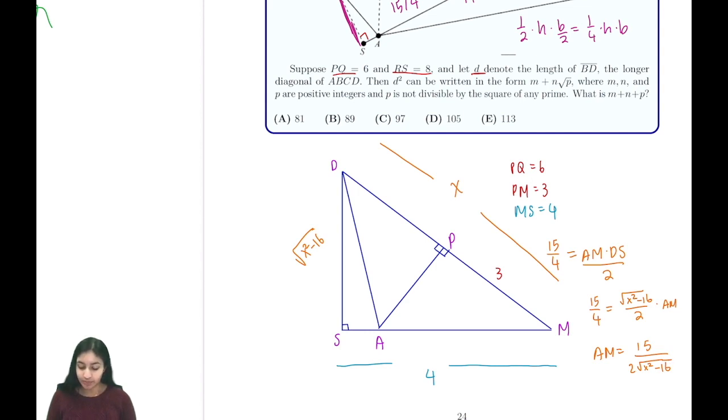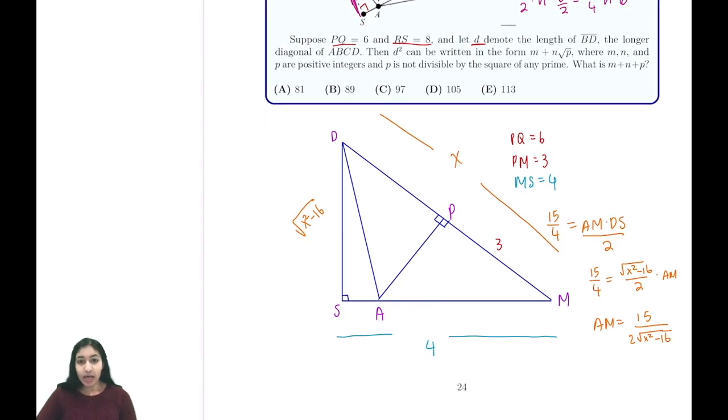Now we're going to look at AM in another way, using the fact that ASDP is actually a cyclic quadrilateral. We can tell because opposite angles DSA and APD sum to 180, which means the other two angles must also sum to 180. Because this quadrilateral is cyclic, we can envision a circle around it, which tells us we can use power of a point.